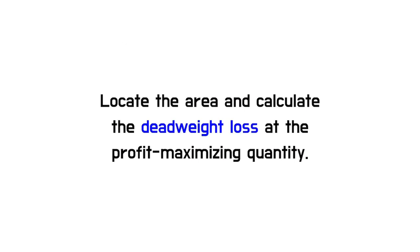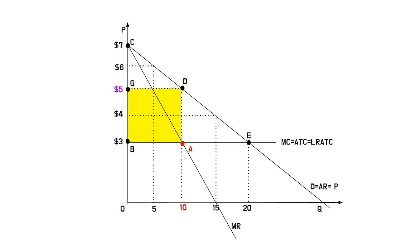Fourth, let's locate the area and calculate the deadweight loss at the profit-maximizing quantity. As we learned that the deadweight loss in the Monopoly equals the Monopoly revenues minus profits, the answer might be $10, which is the area of ADE colored in blue.